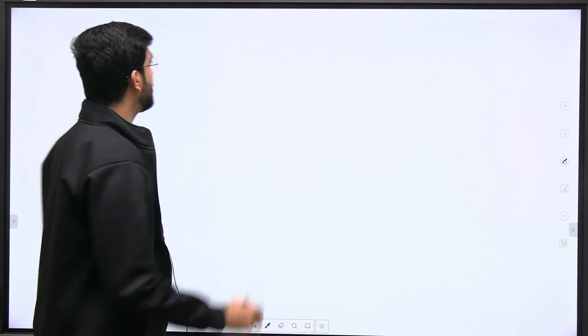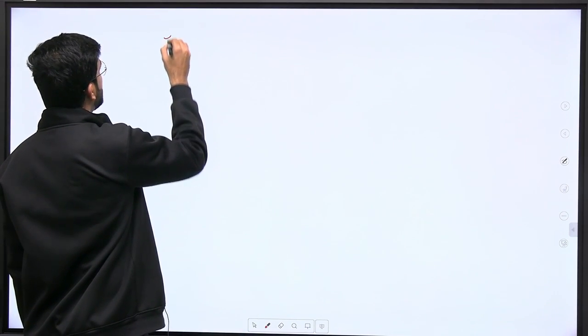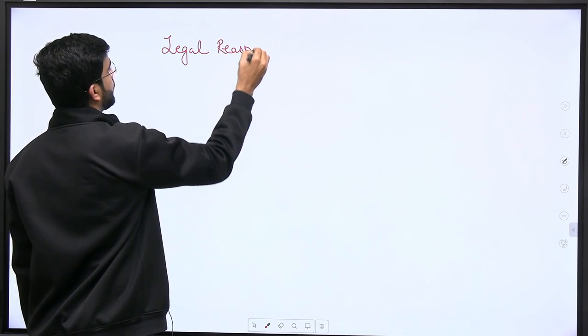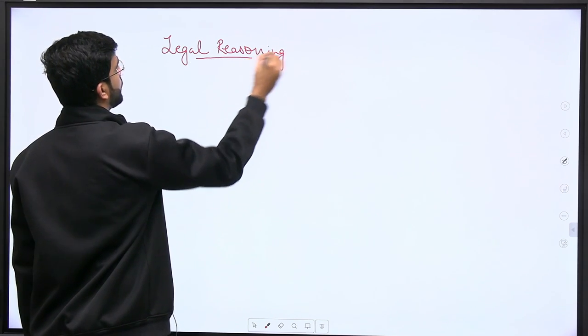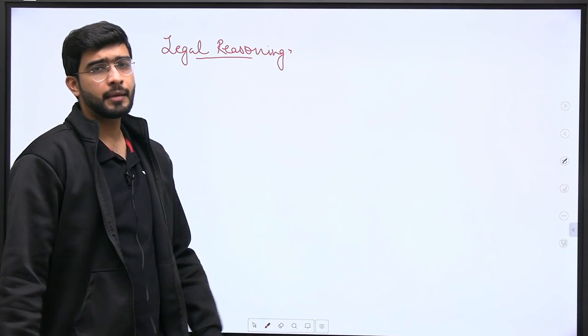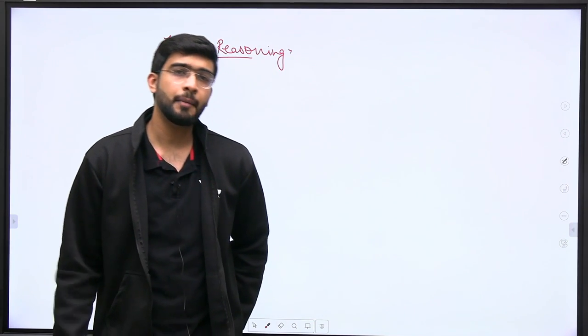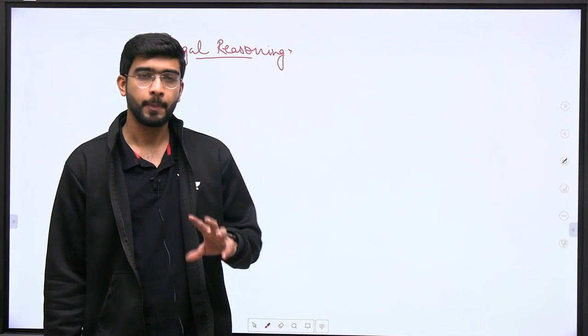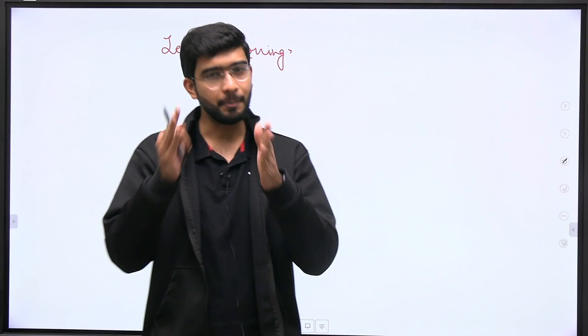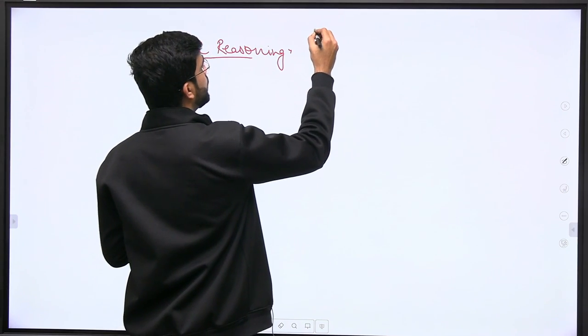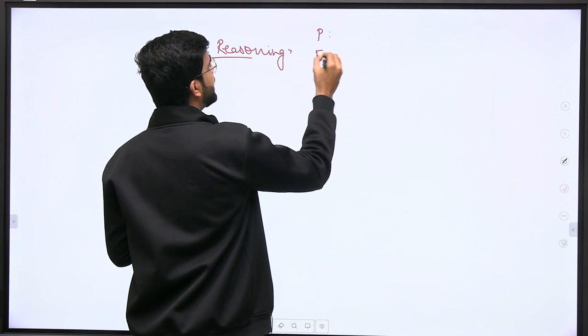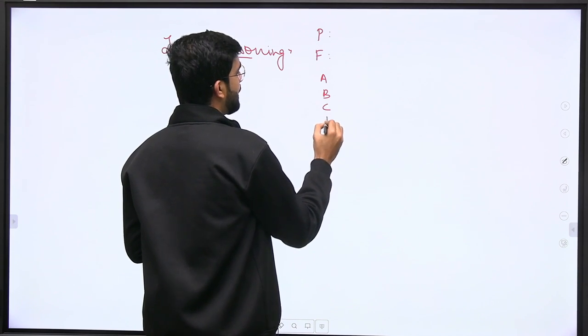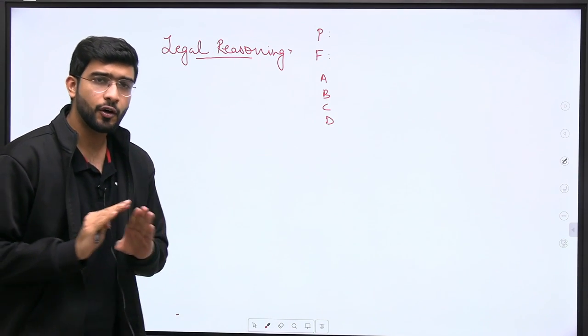Now, the next subject comes: Legal reasoning. What do we do in legal reasoning? So in legal reasoning, if you have seen CLAT papers, it was CLAT's old pattern. So CLAT's pattern changed in 2020. Earlier, CLAT's old pattern was: they gave a principle, they gave a fact, and you analyzed the principle and facts and had to tell the answer in ABCD. MHCET's pattern is that. MHCET's pattern still is following the same pattern.